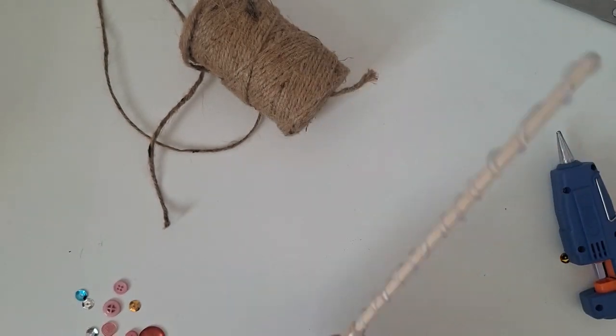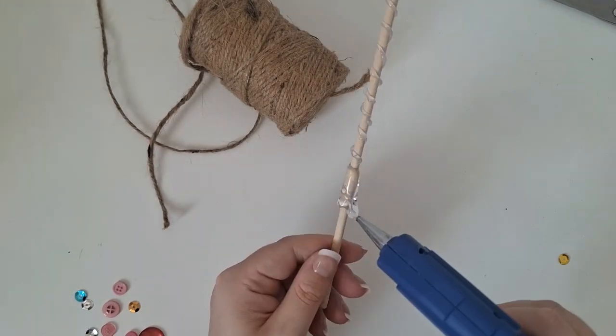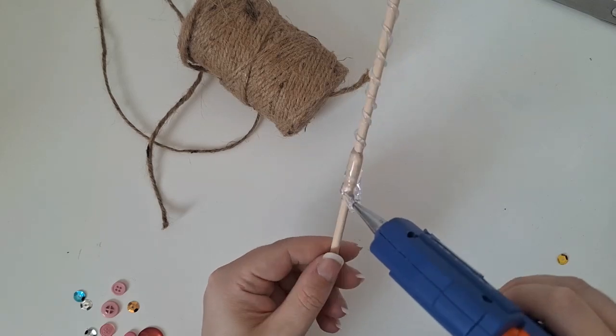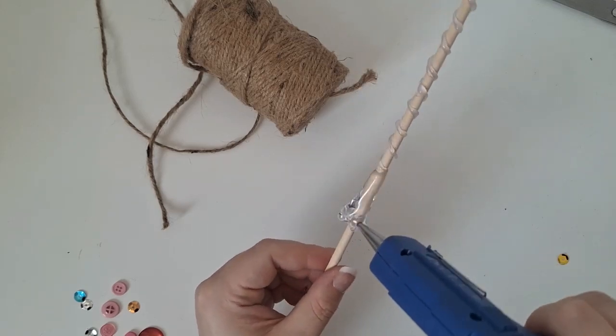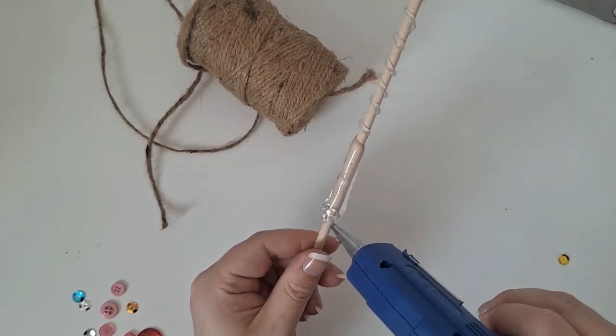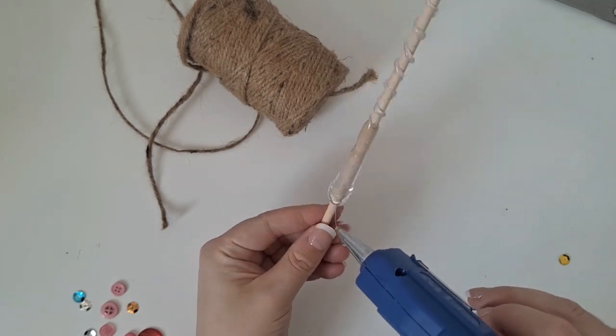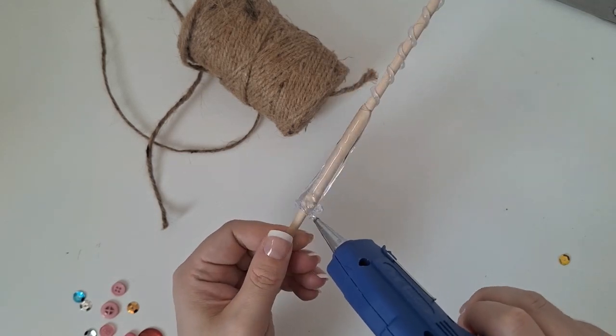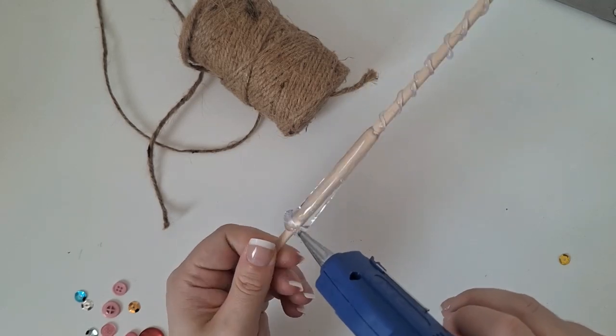I kept twisting my dowel so that then the glue wouldn't drip, otherwise it would just all drip down the one side. You will get some thicker areas of glue and some thinner areas of glue, but this creates a really organic shape which is perfect for magic wands.